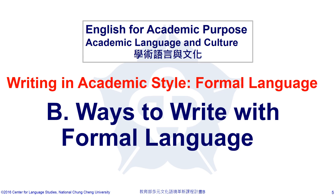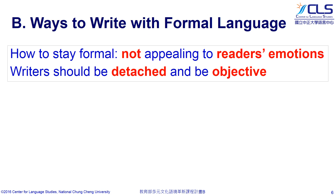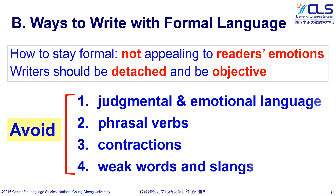In order to be formal, academic writing should not appeal to readers' emotions. Writers need to be detached and objective by following the rules. First, avoid using judgmental and emotional language. Next, avoid using phrasal verbs. Finally, avoid using contractions, weak words, and slangs.